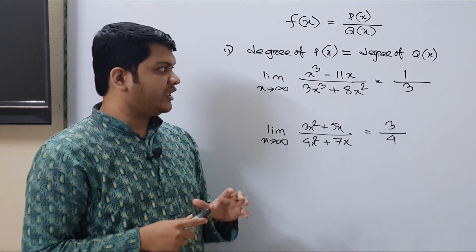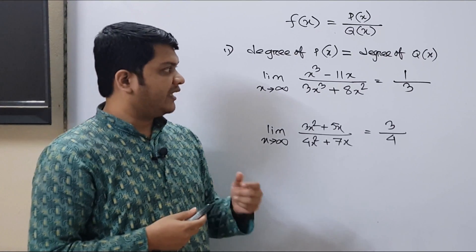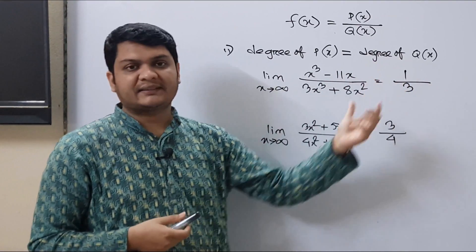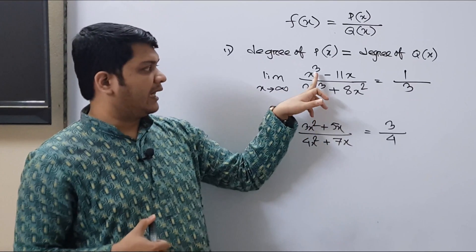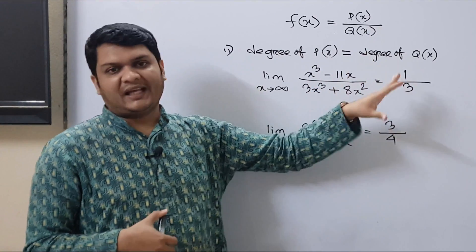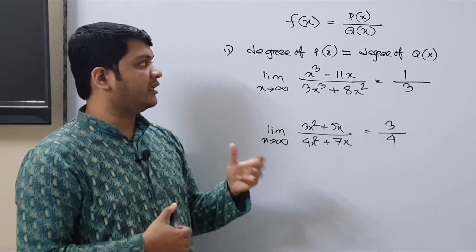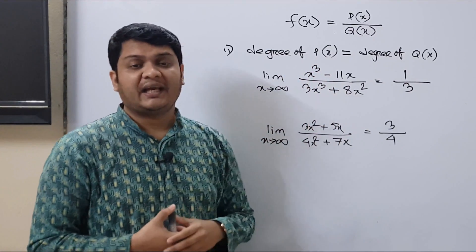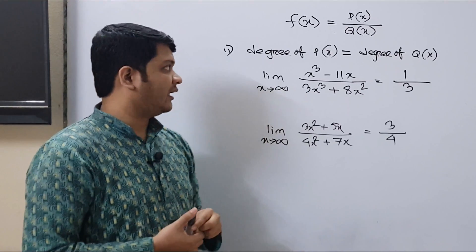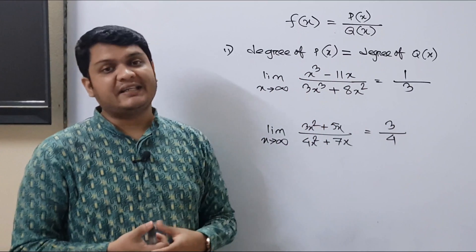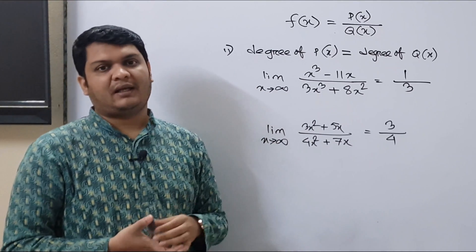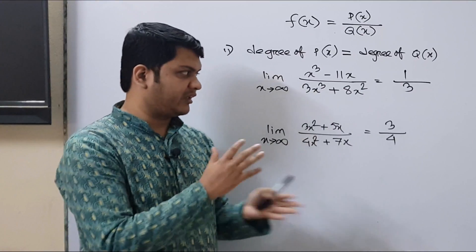So I hope you understood the concepts discussed so far. We are done with two cases: when the degree of P(x) is equal to the degree of Q(x), the result is the ratio of the leading coefficients; and from the previous video, when the degree of P(x) is less than the degree of Q(x), the result is always 0. We are left with the third case — when the degree of P(x) is greater than the degree of Q(x) — so stay tuned with this channel for that concept.